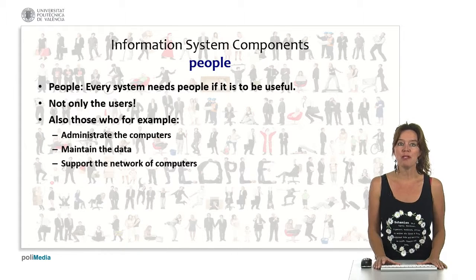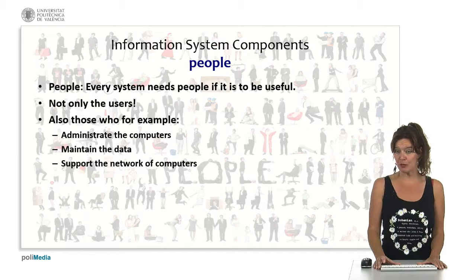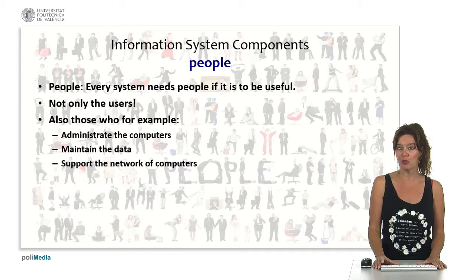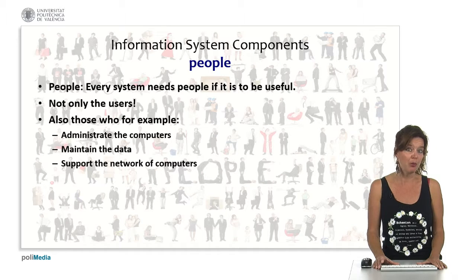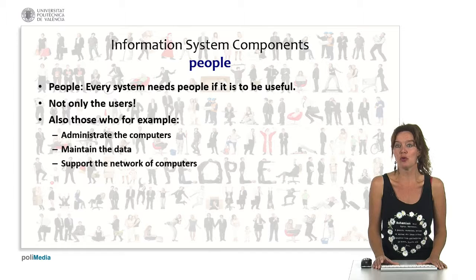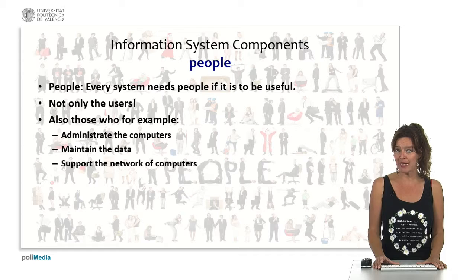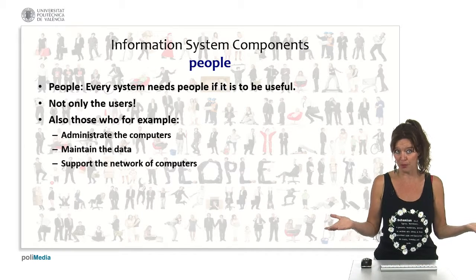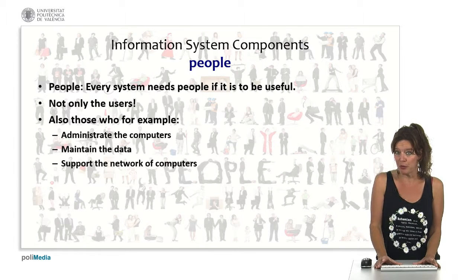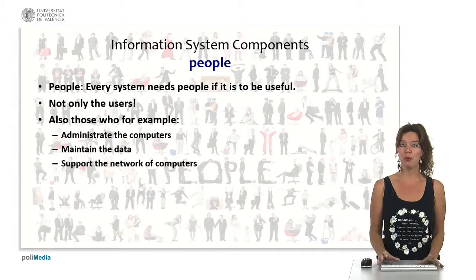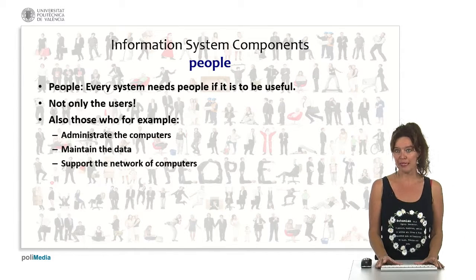The final component is people. People are always needed because if nobody is operating the system, the system is not really useful. But these are not only the users — it's also people that administrate the computers, install the software and do the updates, maintain and input the data, and support the network of computers. If a computer breaks it should be fixed. So this is a whole team of people that we need in order to make an information system work.